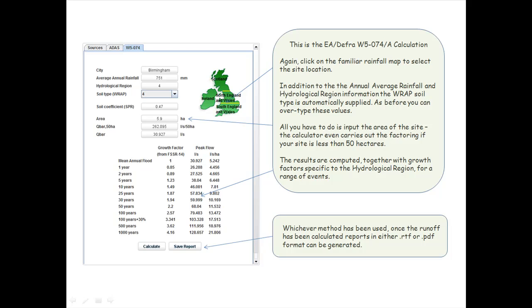All you have to do is input the area of the site. The calculator even carries out the factoring if your site is less than 50 hectares. The results are computed together with growth factors specific to the hydrological region for a range of events.